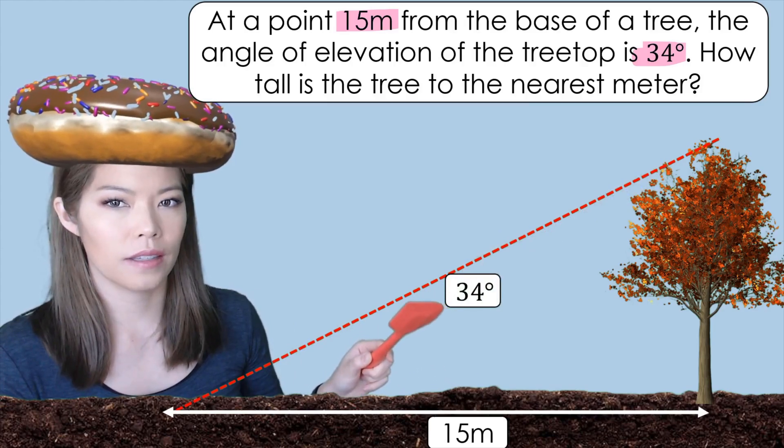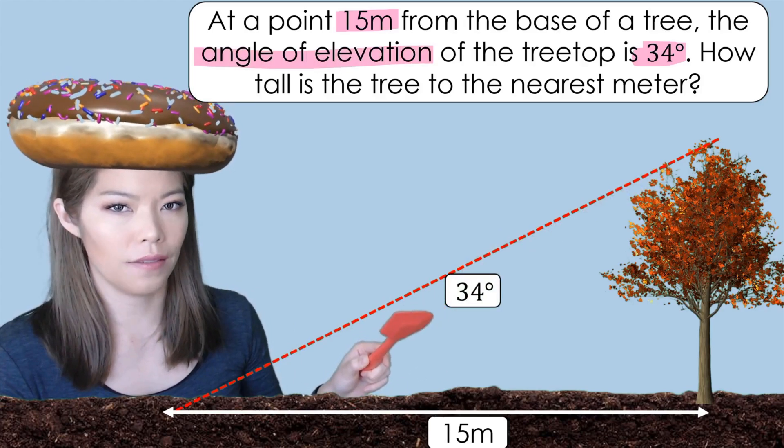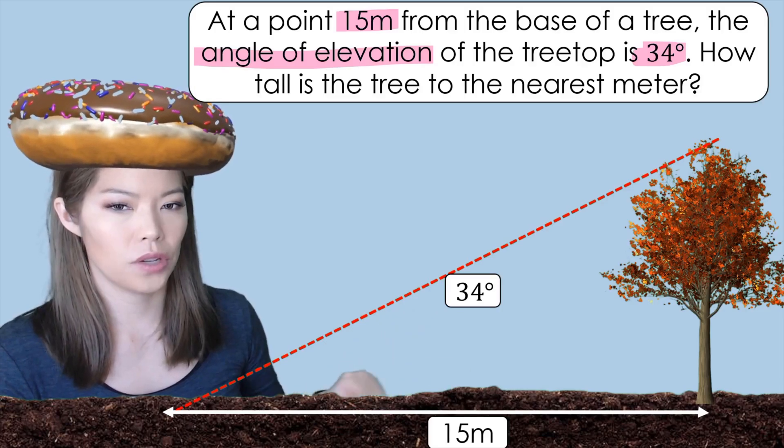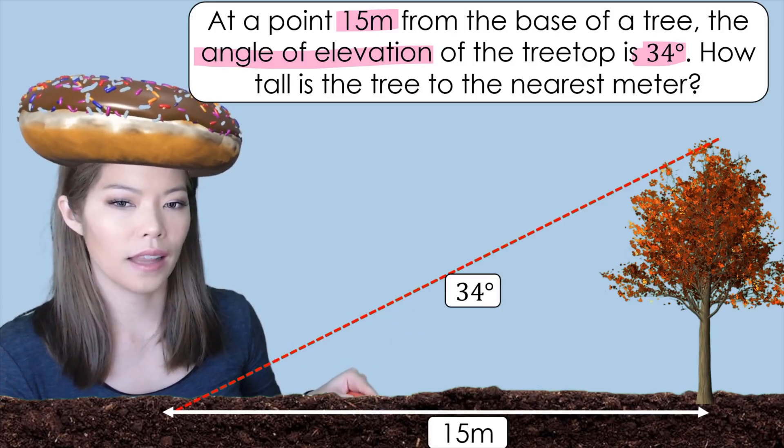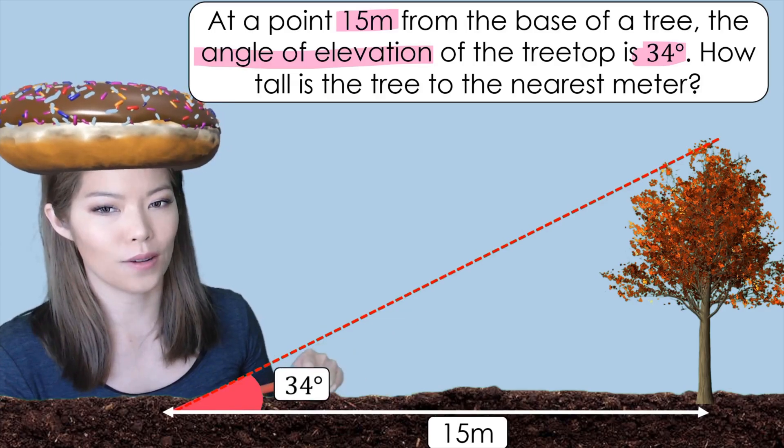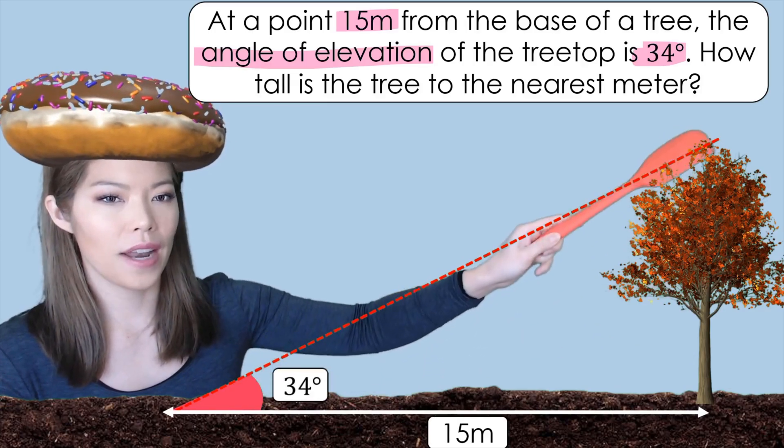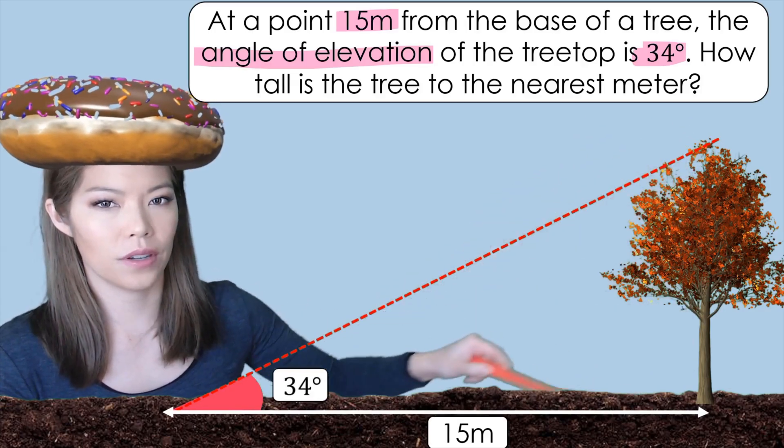Now 34 degrees is talking about the angle of elevation. So remember we have to measure with the horizontal line and elevation would mean this angle over here. So not that angle over there also because it's a vertical line.